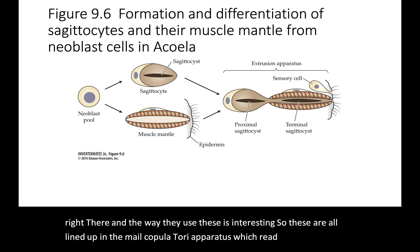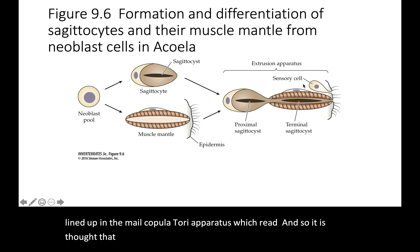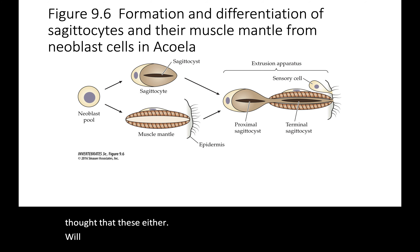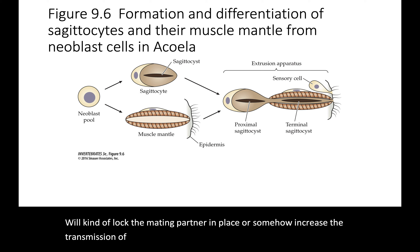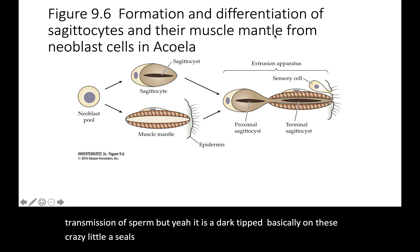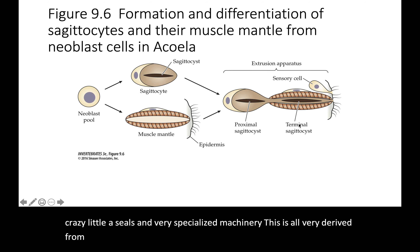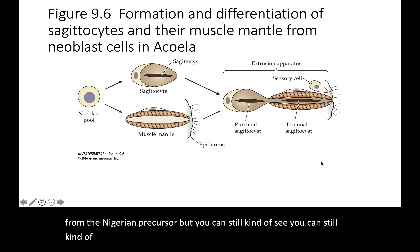The way these are used is interesting: they're all lined up in the male copulatory apparatus — read: penis. It's thought that these either lock the mating partner in place or somehow increase sperm transmission. So it's basically a dart-tipped penis on these crazy little Acoela — very specialized machinery, derived from the cnidarian precursor, but you can still see the similarity.